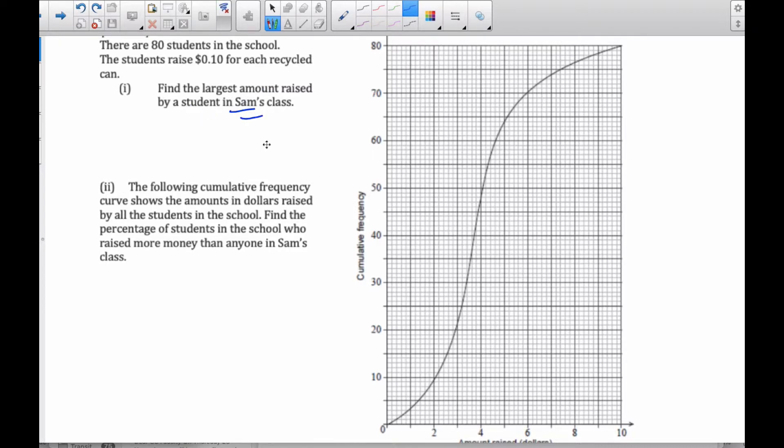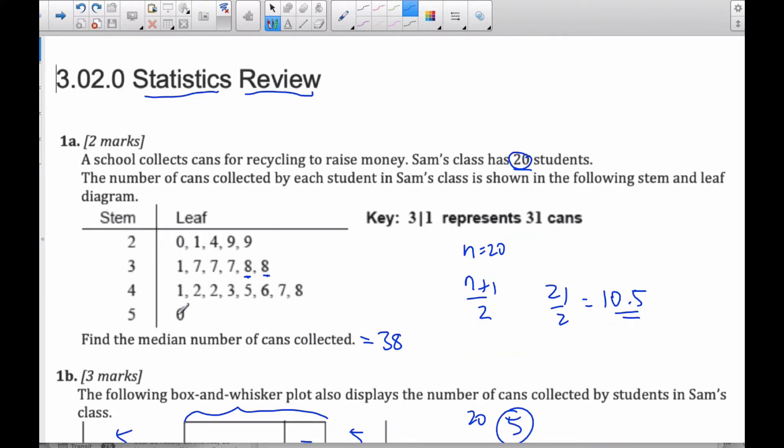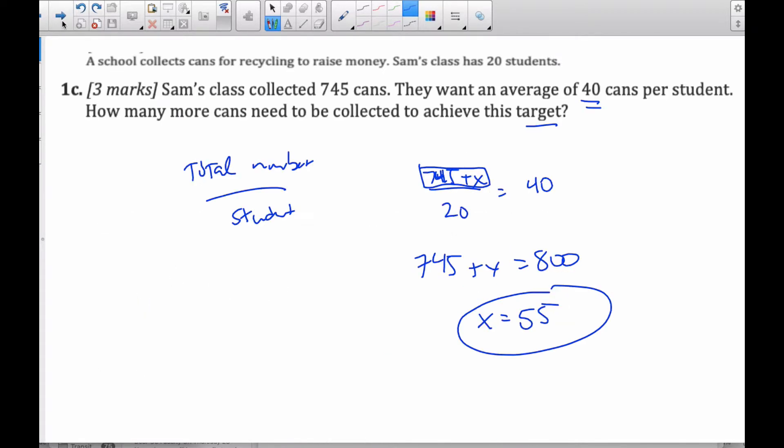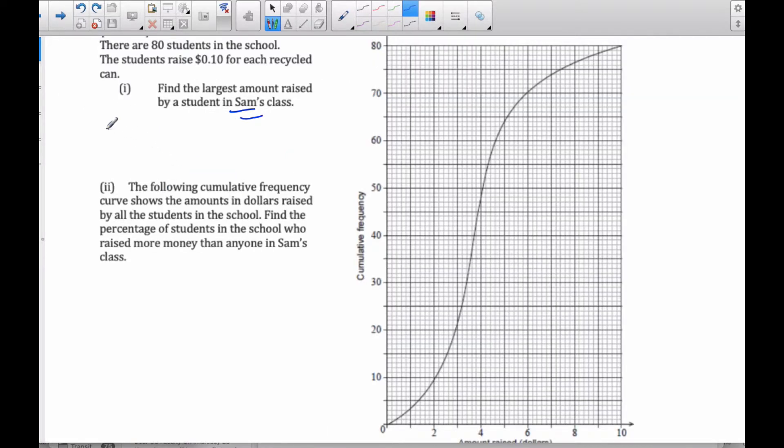Okay, so this is the school. So Sam's class, let's refer back to here. This is Sam's class. That's the largest, 50 cans was Sam's largest student. So I know 50 cans, the largest amount raised by Sam's class is 50 times 0.1, which is going to be $5 in total.